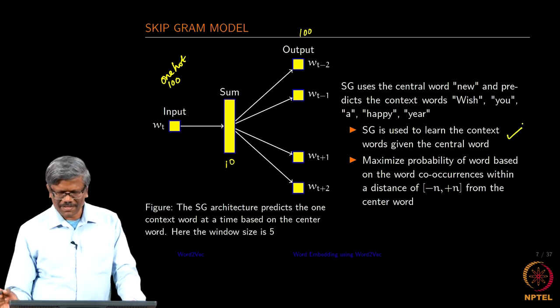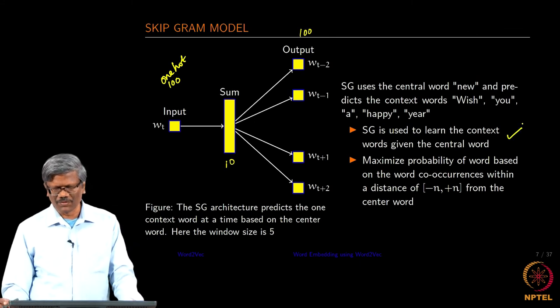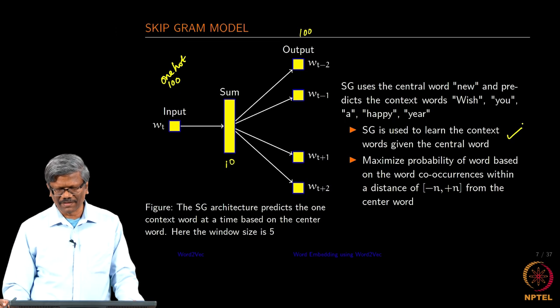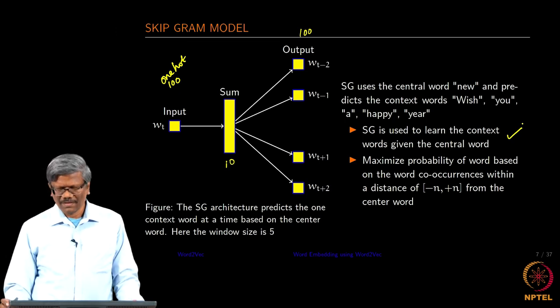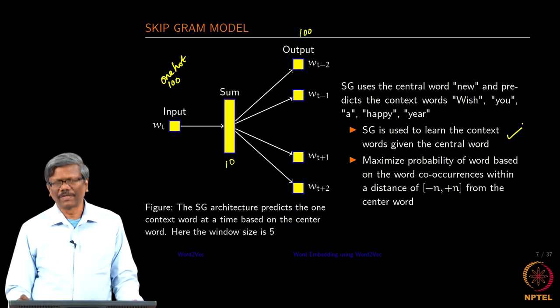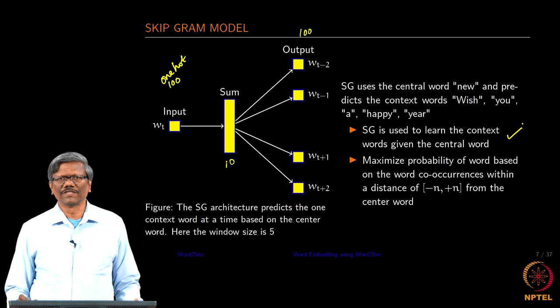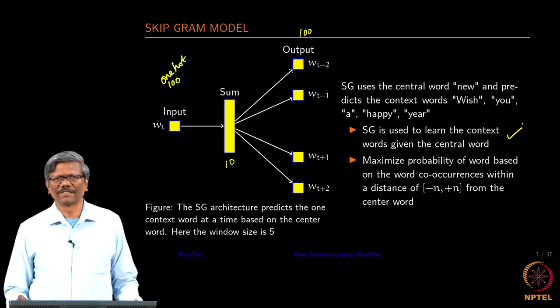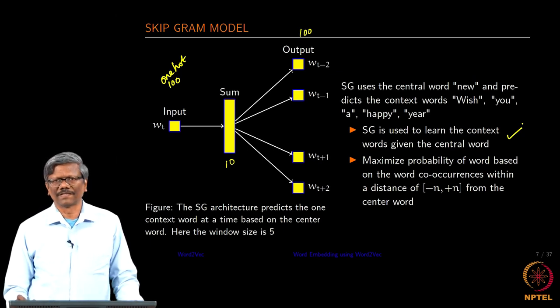As mentioned, skip-gram is used to learn the context word given the central word. We will try to maximize the probability of a word based on its word occurrence within the distance of minus n to plus n from the central word.